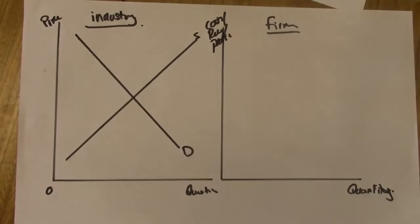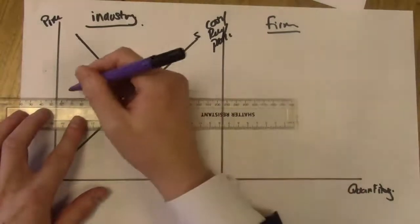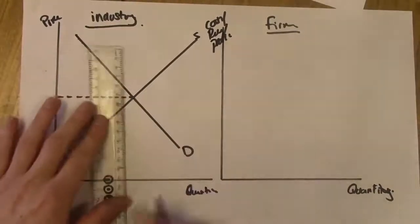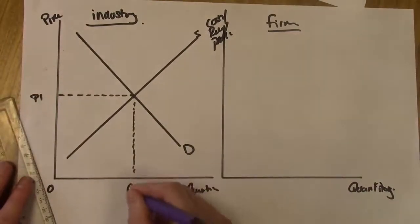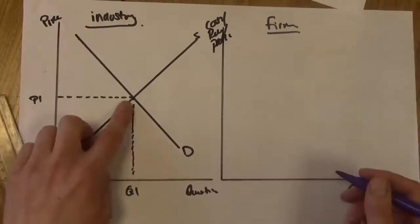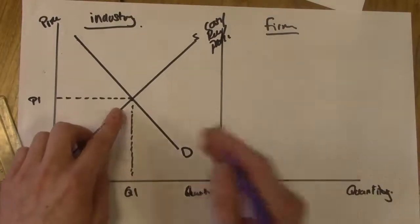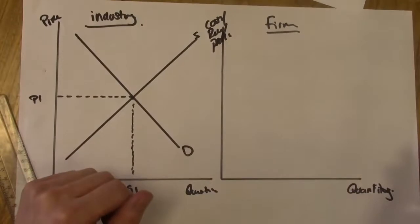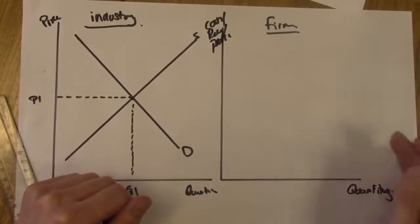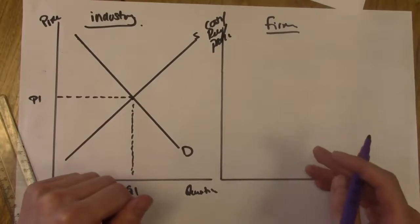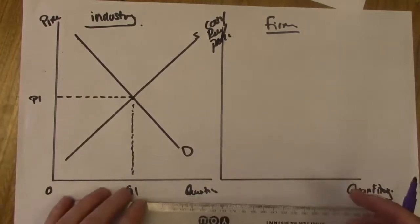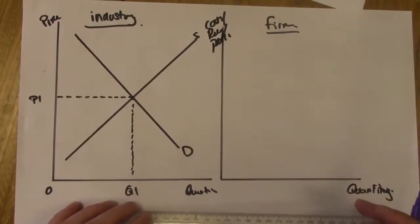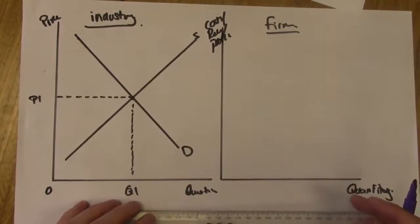On the industry diagram, label your price with dash lines and quantity with dash lines — we'll call these P1 and Q1. This shows the price set by the free market forces of supply and demand. In perfect competition the firm is a price taker, meaning the price is determined by the industry. Contrast this with monopoly where the firm is a price maker.